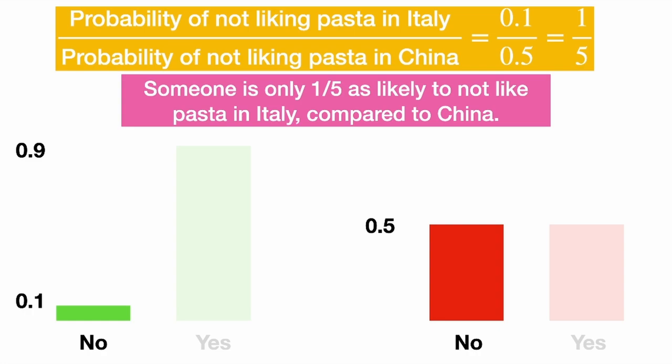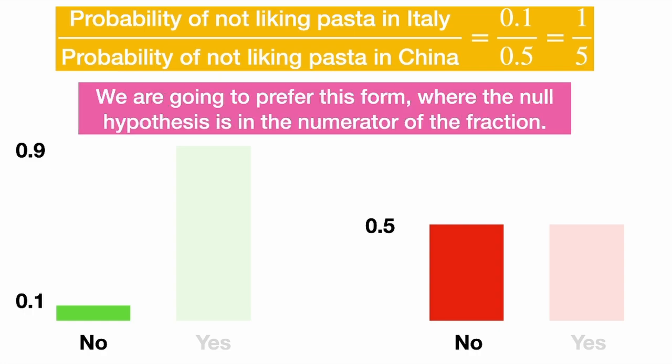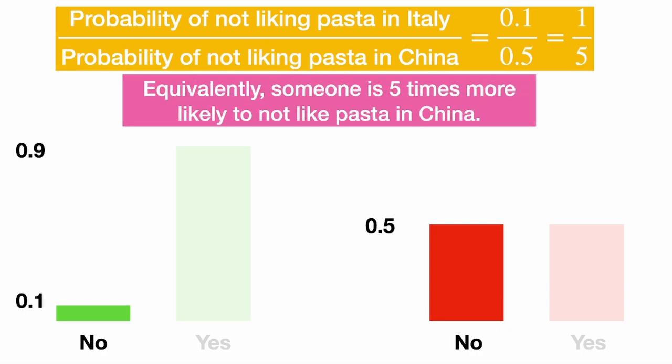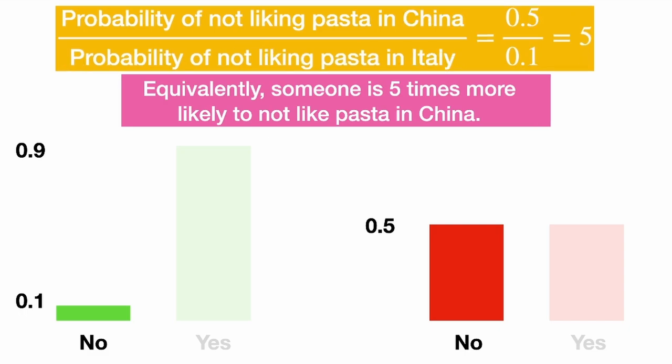We are going to prefer the form where the null hypothesis likelihood is in the numerator of the fraction. Equivalently, someone is five times more likely to not like pasta in China — we just switch the probabilities on top and bottom. That is still a likelihood ratio.